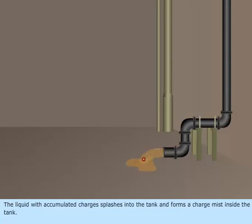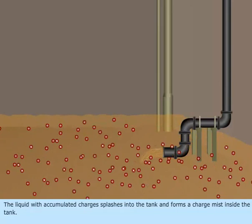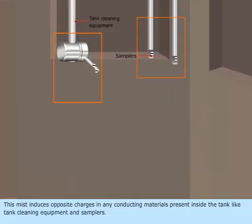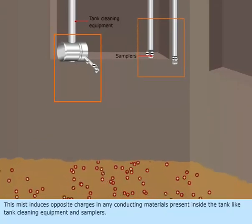The liquid with accumulated charges splashes into the tank and forms a charged mist inside the tank. This mist induces opposite charges in any conducting materials present inside the tank, like tank cleaning equipment and samplers.